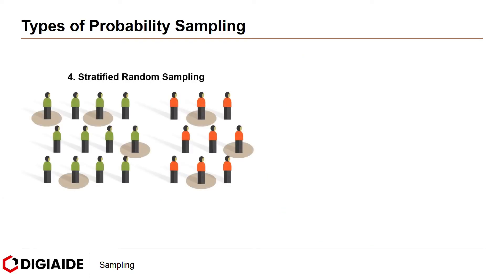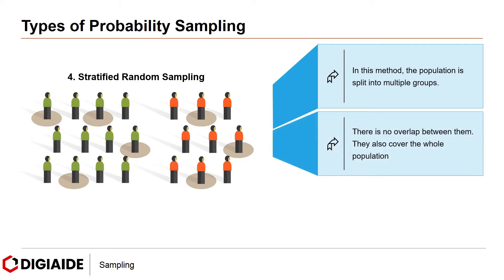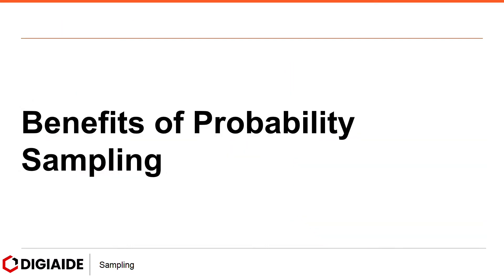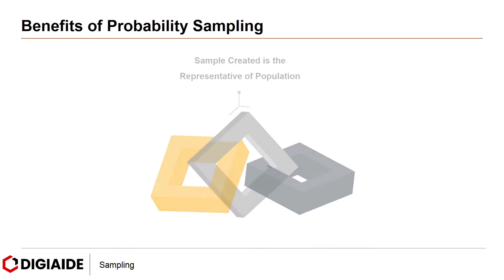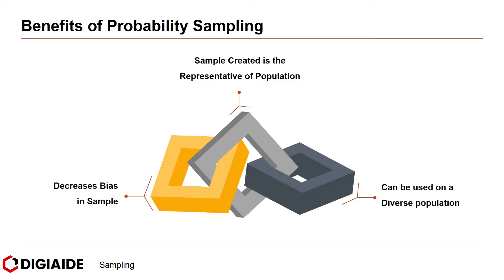And fourth, stratified random sampling. In this method, the population is split into multiple non-overlapping groups that cover the entire population. A sample from every group can be picked separately after the groups are appropriately arranged. The benefits of probability sampling are clear: first, the sample created is representative of the population; second, it can be used on a diverse population; and finally, it decreases bias in the sample.